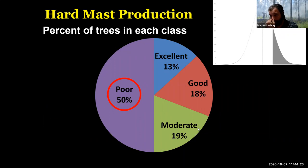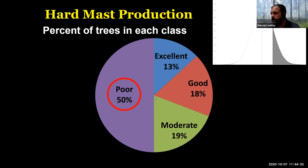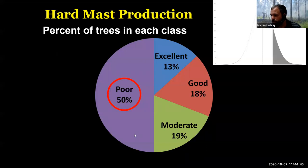I actually measured and counted thousands — probably hundreds of thousands — of acorns when I was doing this research. When I was looking at these populations of white oak, about 50% of the oaks were poor producers. Basically this line right here — all of these would be poor producers.